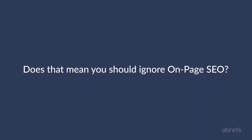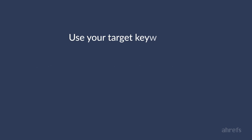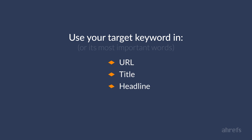So does that mean you should ignore any kind of keyword optimization and write as you please? Not really. The rule of thumb is to use your target keyword, or at least the most important words of your keyword, in the following places: URL, title, headline, and content.